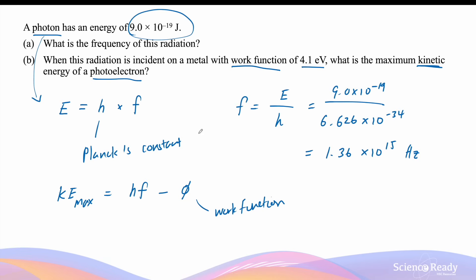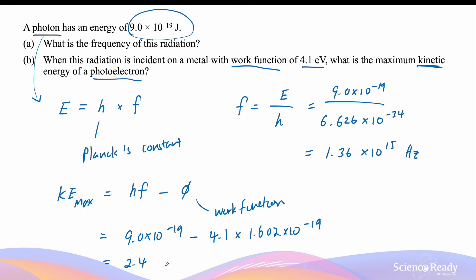In the first part of the question, we already found the frequency, and the energy of the photon was already provided. We subtract the work function of the metal: 4.1 electron volts, converted to joules by multiplying by the charge of an electron. Taking the photon's energy and subtracting 4.1 electron volts times the electron charge gives 2.4 times 10 to the power of minus 19 joules — the leftover energy transformed into the electron's kinetic energy.